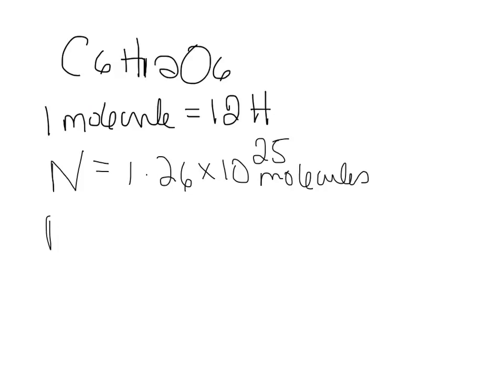So to find the number of hydrogen atoms, we have to take that number N and multiply it by 12, because there are 12 hydrogens for every one molecule.